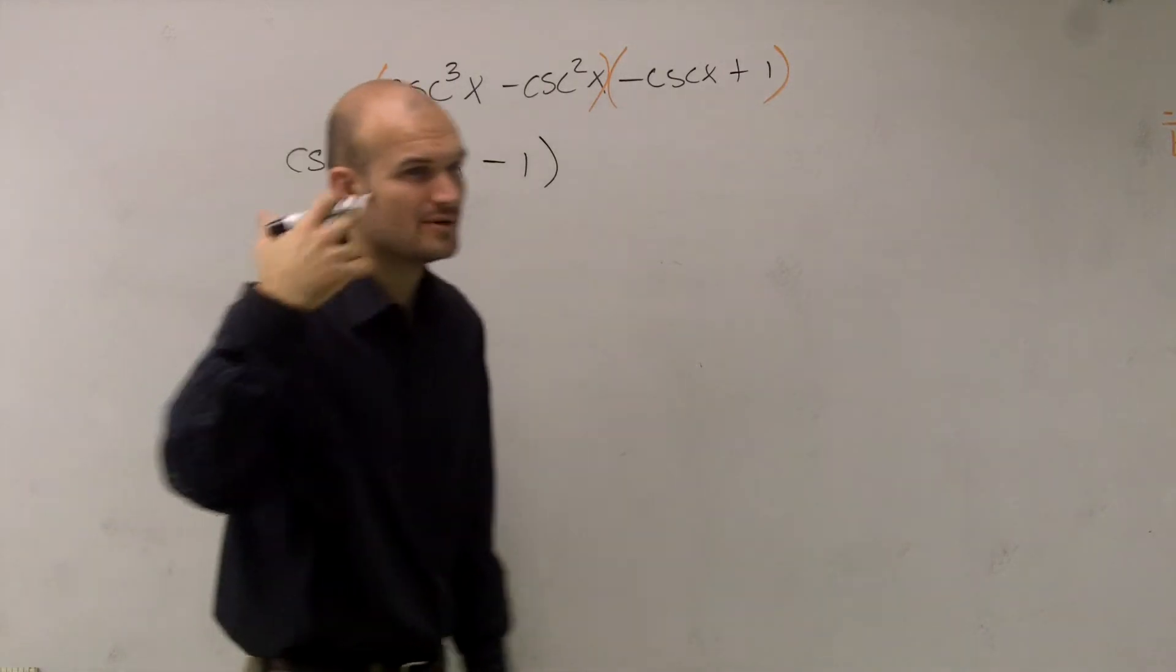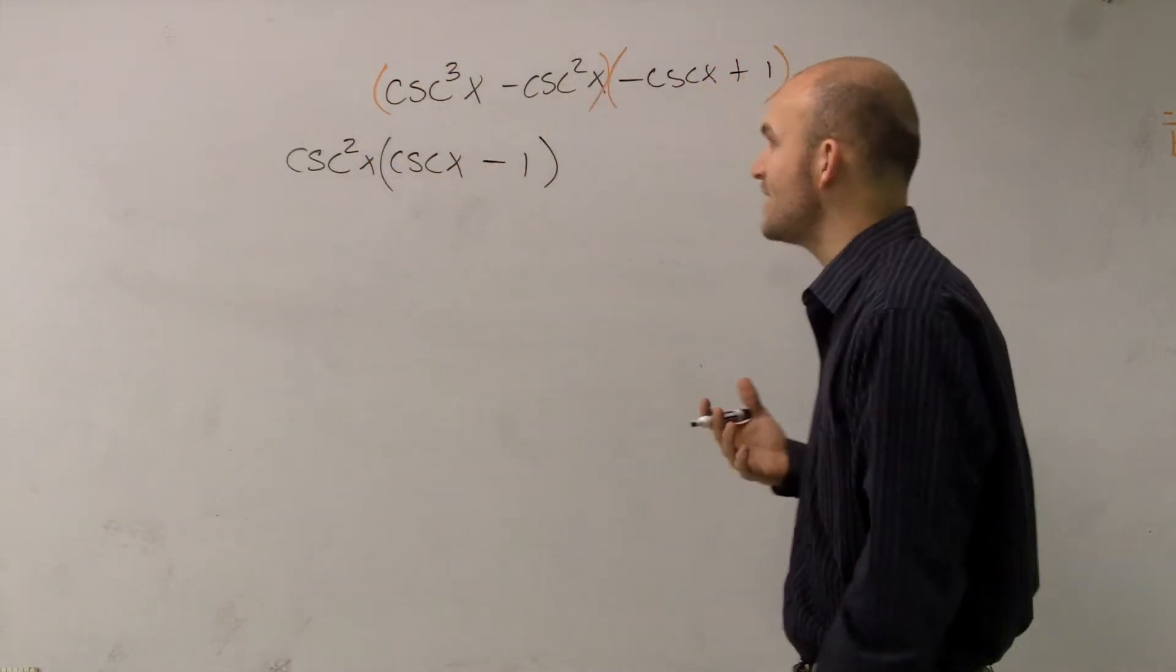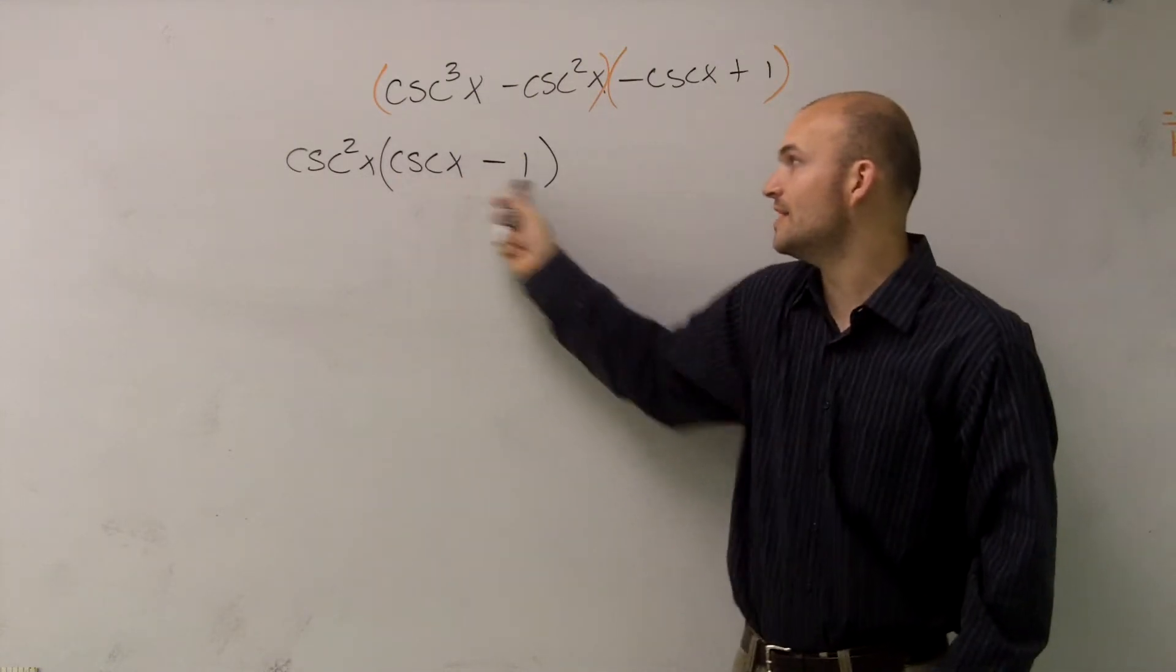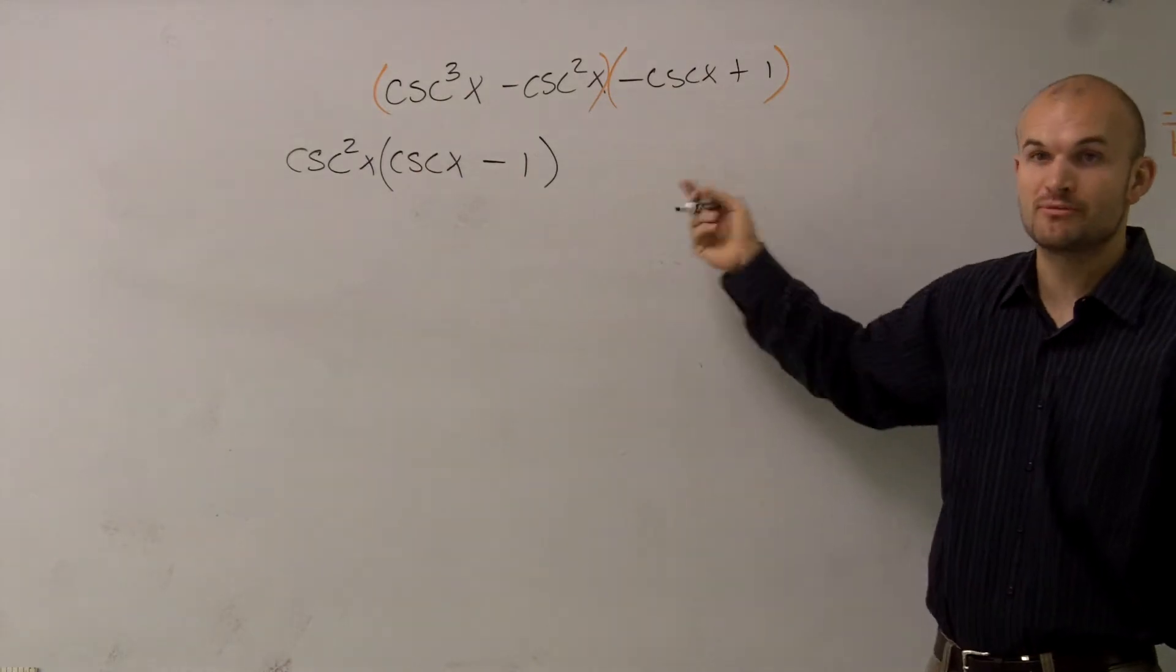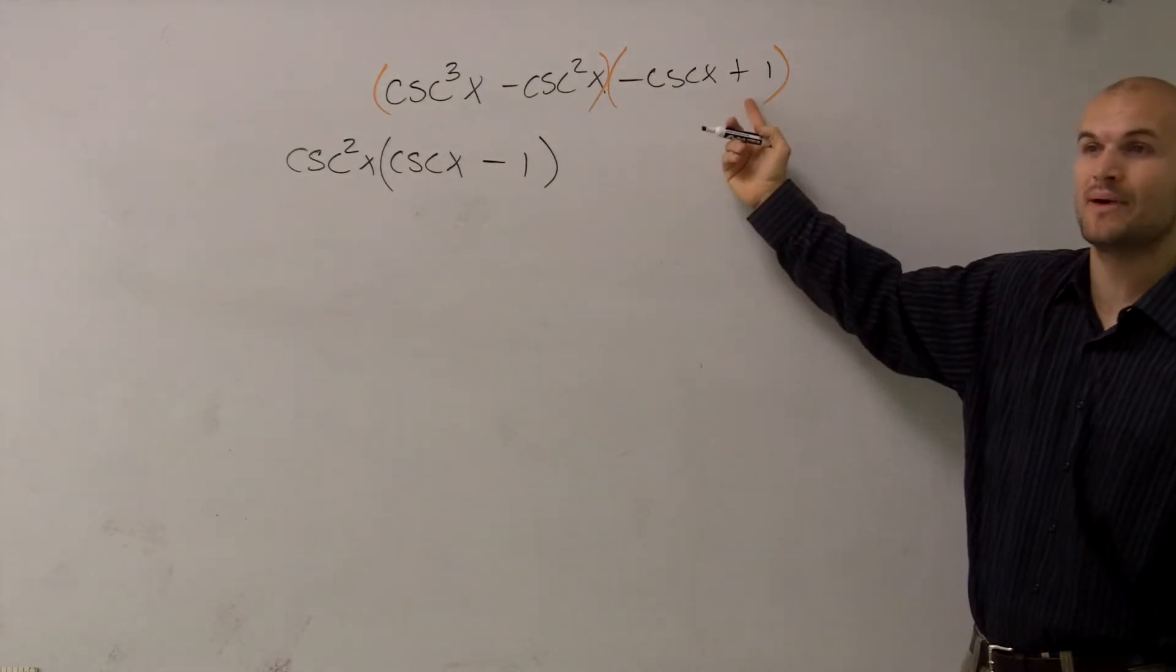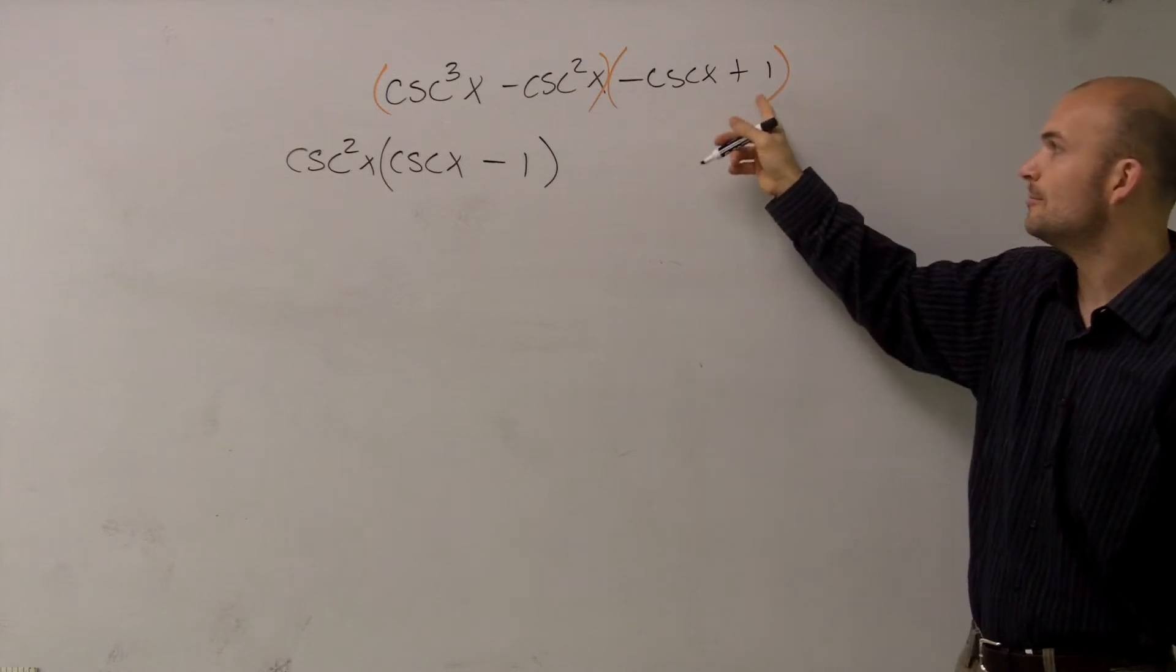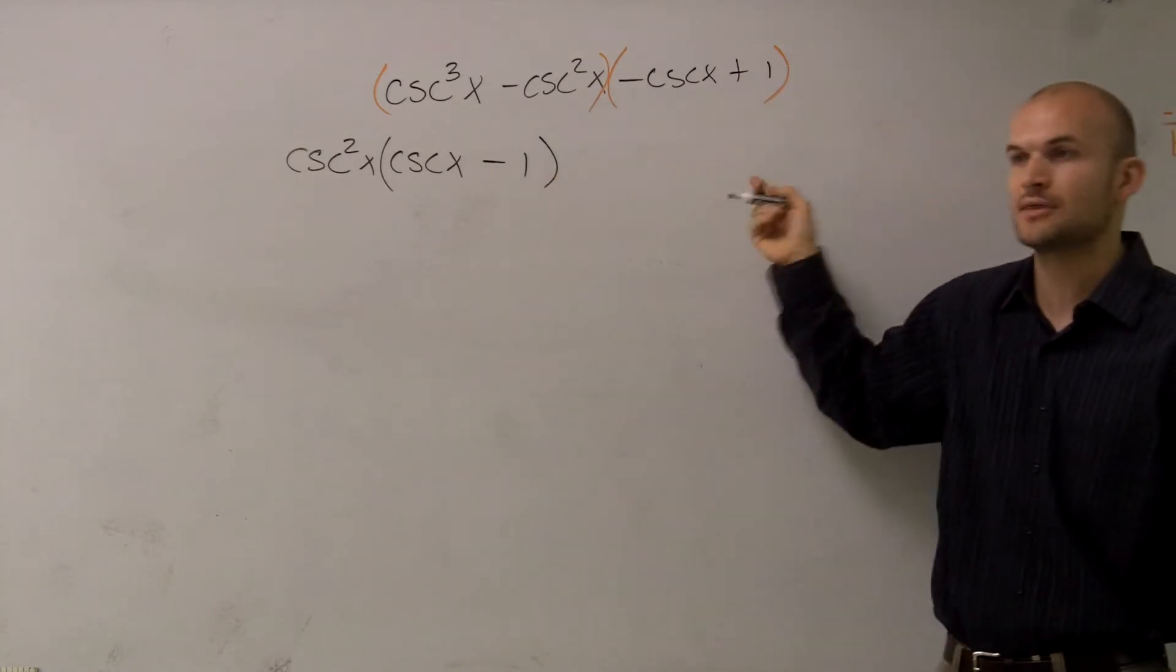The important thing to understand when you practice with factoring by grouping is notice this is a minus 1. I want this and my other term to be exactly the same. Therefore, since this is a positive 1, I'm going to want to make that a negative 1. And I'll show you why in a second. But you want to make these two, what's inside the principle, the same.